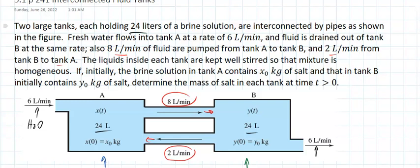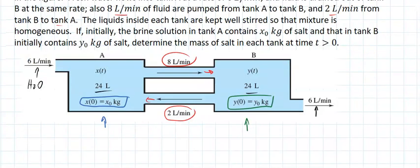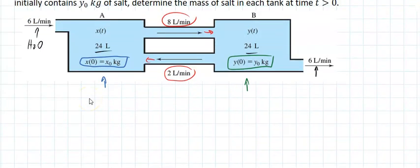The liquid inside each tank is constantly stirred so the mixture is homogeneous, that's always the assumption. Initially, the brine solution in tank A is x sub zero kilograms and in tank B is y sub zero kilograms.